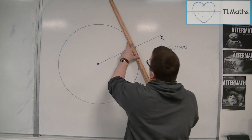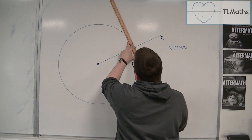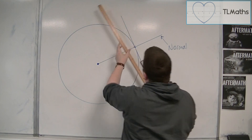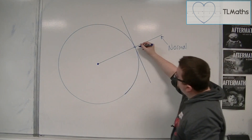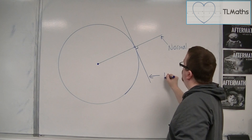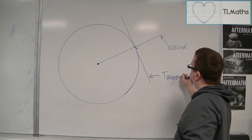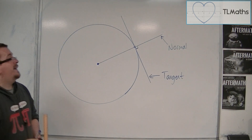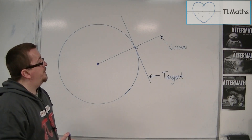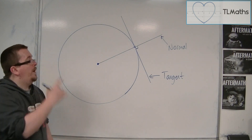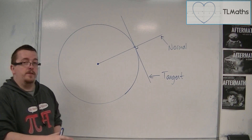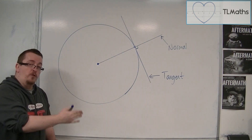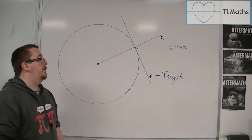The tangent line would be going at right angles to the normal — so this is your tangent line. In circle questions, you can expect to find problems that revolve around — no pun intended — finding the equation of the normal or finding the equation of the tangent.